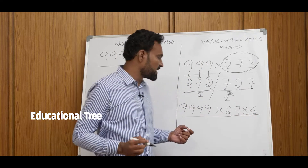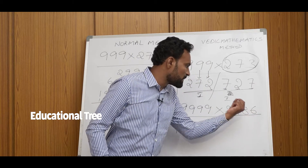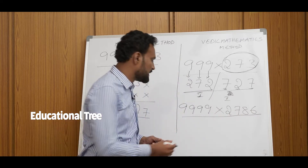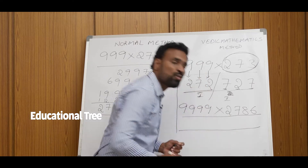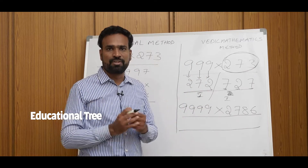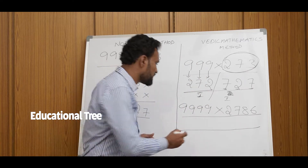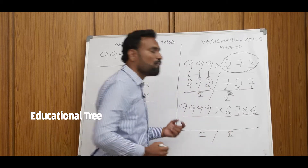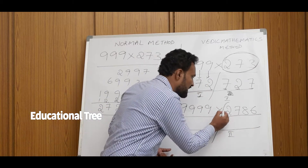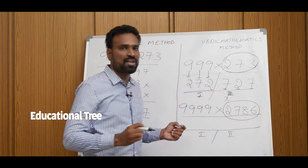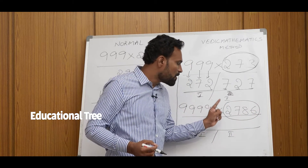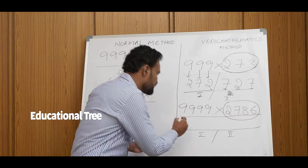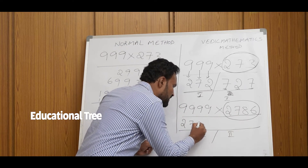For this multiplication, we find the first part and the second part. The second part involves the digits 2, 7, 8, 5.